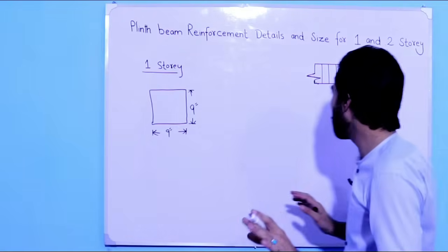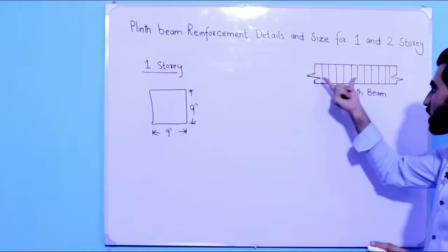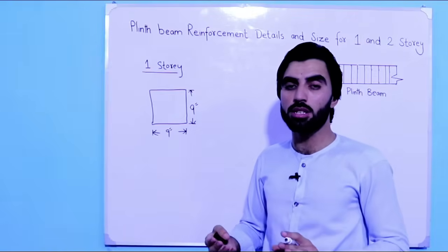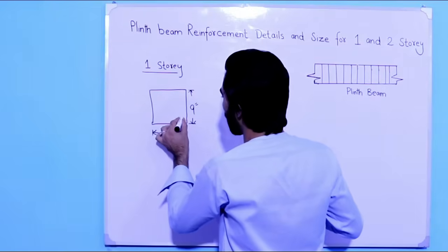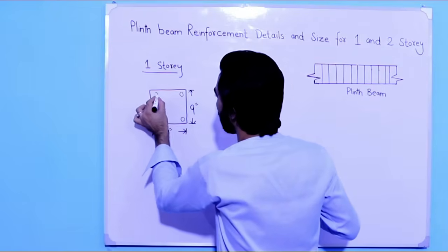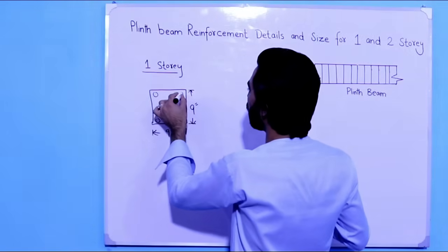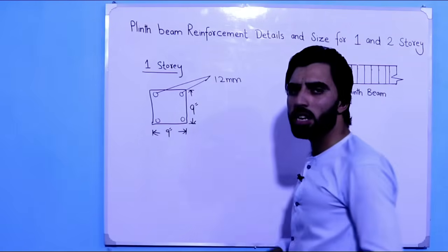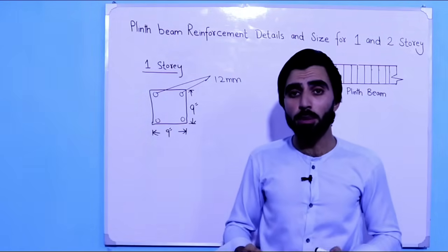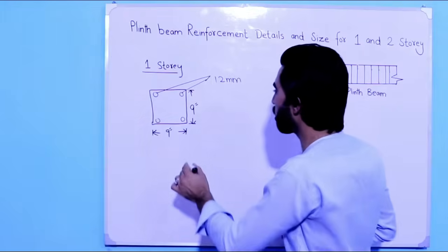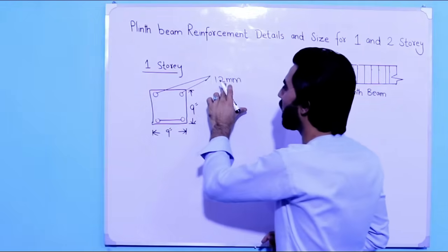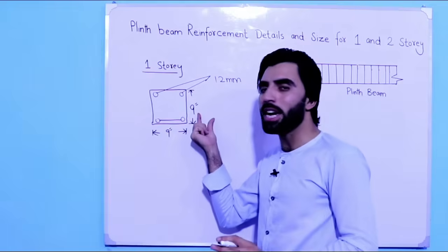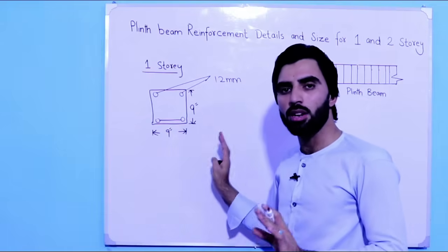Now for the steel reinforcement details — here you can see the long section for the plain beam, with stirrups shown as well. Use 4 numbers of steel bars: 2 at the bottom and 2 at the top. The diameter of the steel bars should be 12 mm. As I have discussed in many videos, the plain beam bar diameter should not be less than 12 mm. So for both bottom and top bars, use 12 mm diameter for a one story building with a 9 by 9 inch size.